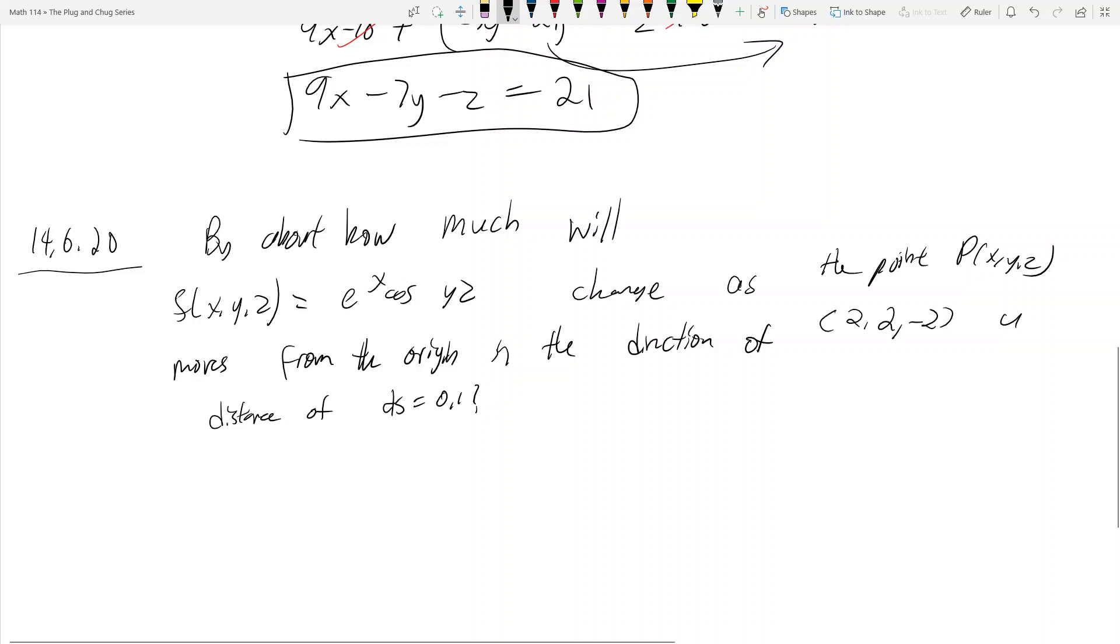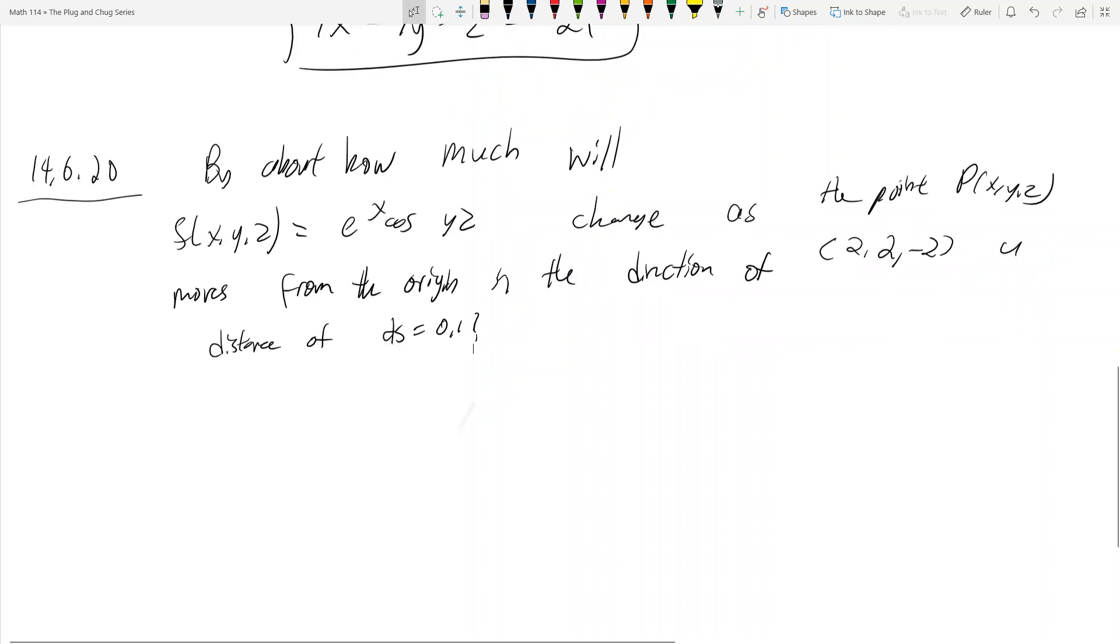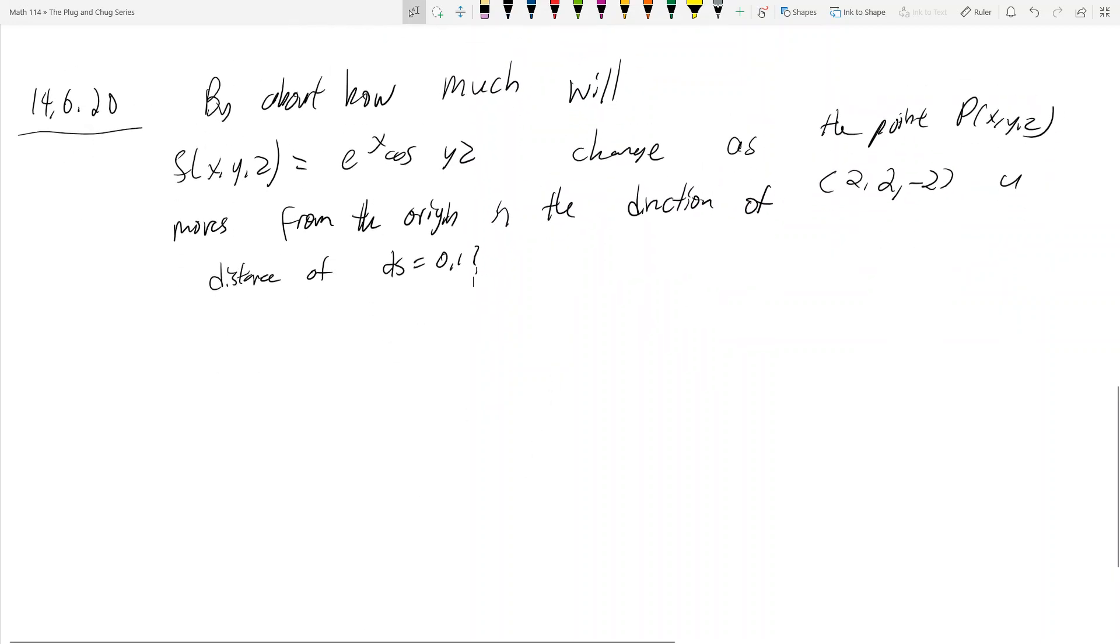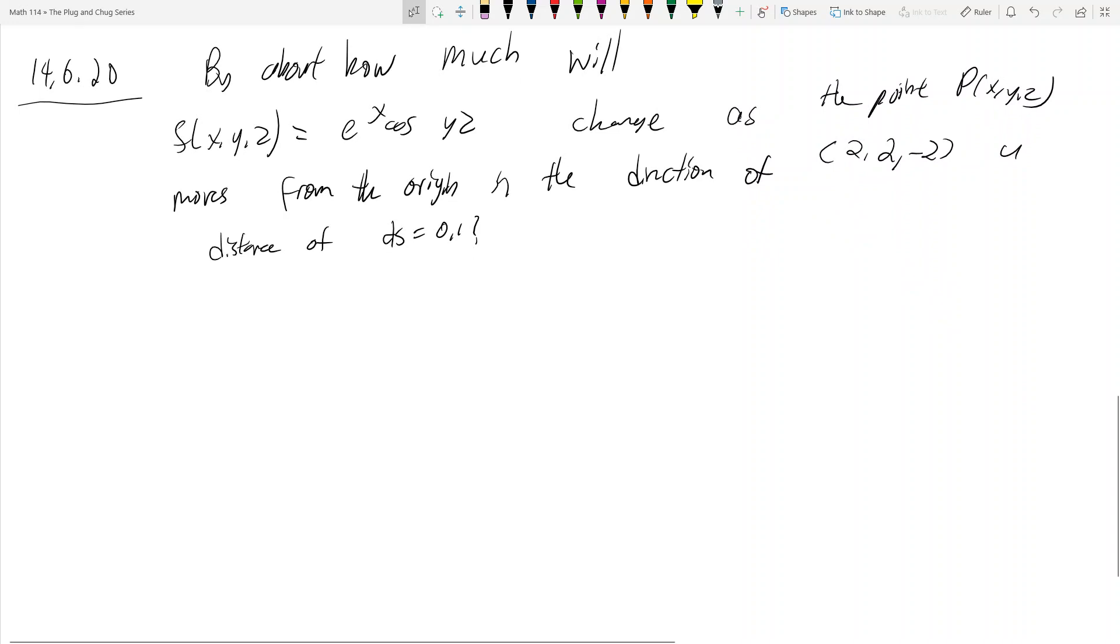Okay, we're still on section 14.6, and we're going to talk about two applications of the gradient. Let's talk about this really shoddy approximation problem. It's called estimating change. I don't really see it on exams, so it's more of a homework type of problem. The question is shown above, 14.6.20: by how much will f of x equals that dude change as the point p of xy moves from the origin in the direction of 2, 2, negative 2, a distance of ds equals 0.1?